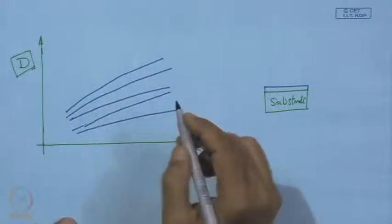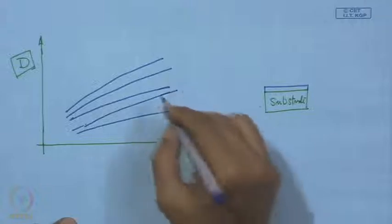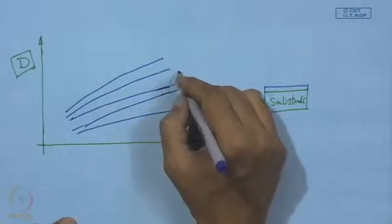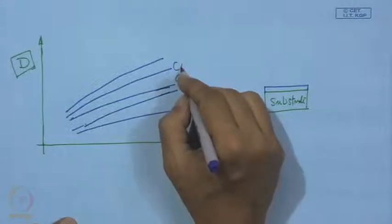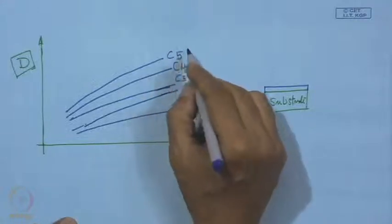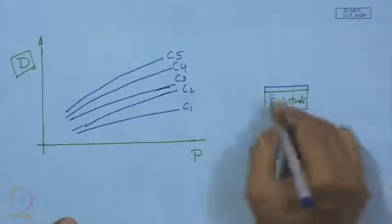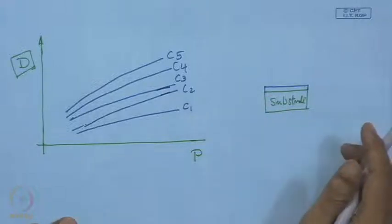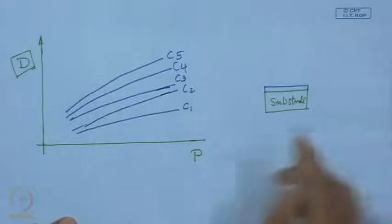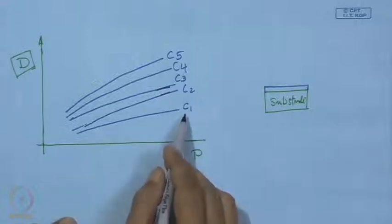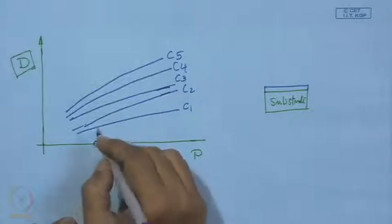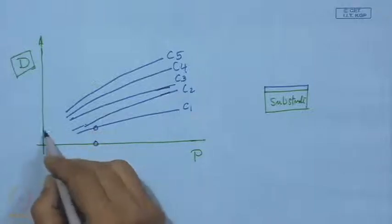The P–D graph shows results for various process conditions C1, C2, C3, C4, and C5, all with substrate and other process variables held constant. The condition C1 always gives the best result because for a particular load P, it gives the smallest crack diameter — which is the index of a good coating.